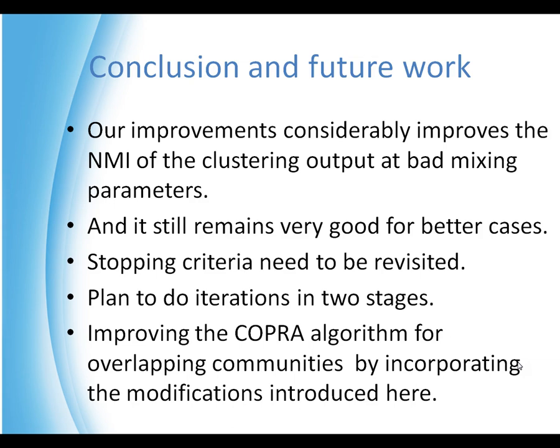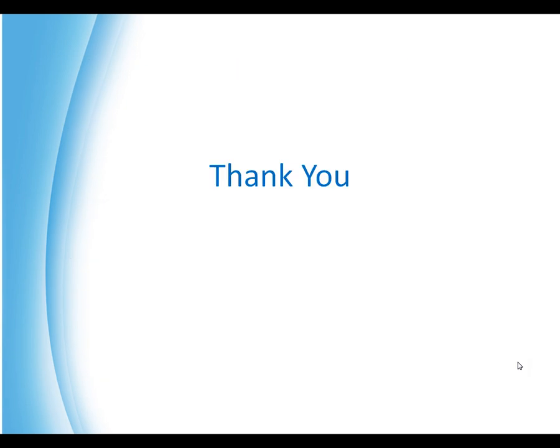In conclusion, our improvements have considerably improved the normalized mutual information of the clustering output even at bad mixing parameters. However, the stopping criteria is something the clustering output is very dependent on and needs to be revisited. We also need to extend this to find overlapping communities — that is our future work. Thank you very much.